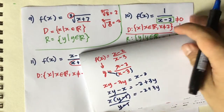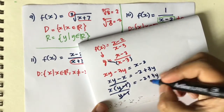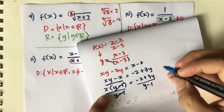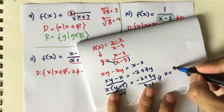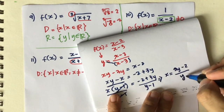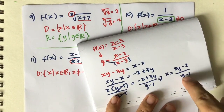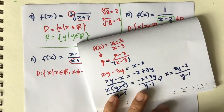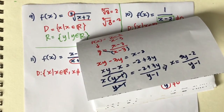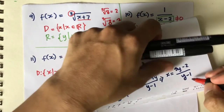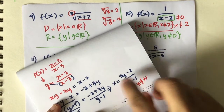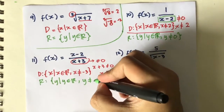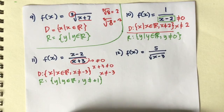Since y - 1 is in the denominator, y must not equal 1, because that would make the denominator 0. So the range is all real values of y except y = 1.